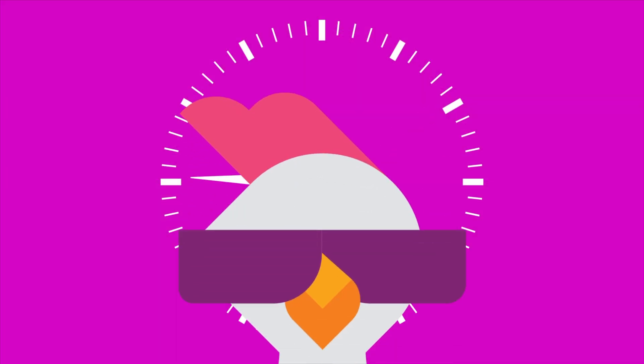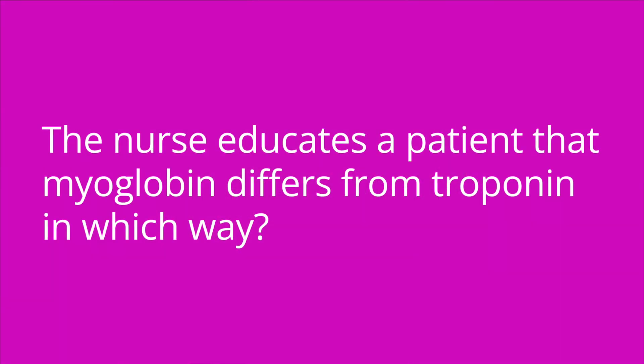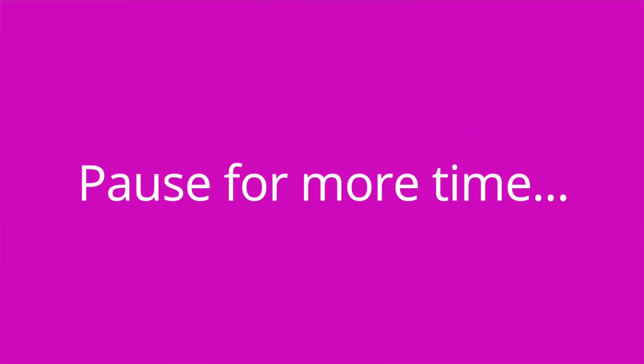Quiz question: The nurse educates a patient that myoglobin differs from troponin in which way? Both laboratory tests show muscle breakdown; however, troponin is specific for cardiac muscle while myoglobin is not.